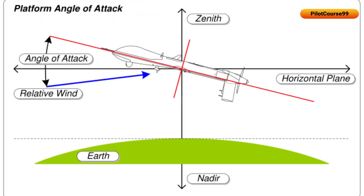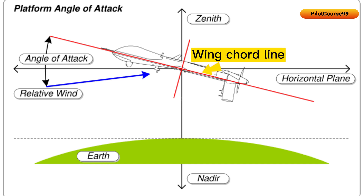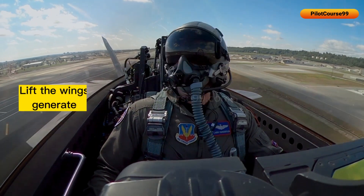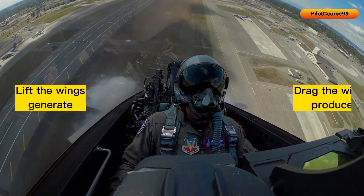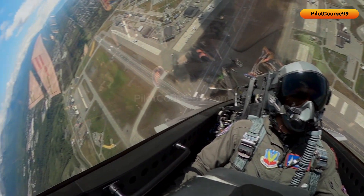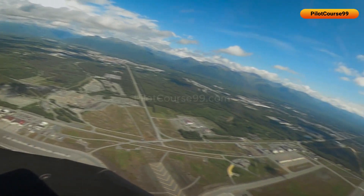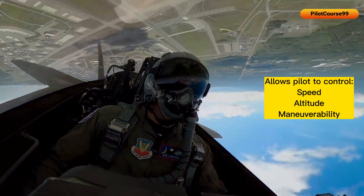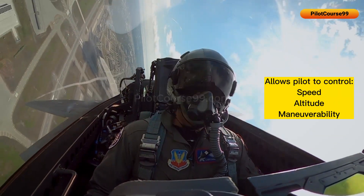Angle of attack in a fighter jet is the angle between the incoming air and the wing chord line, which is an imaginary line that connects the wing's leading edge and trailing edge. It determines how much lift the wings generate and how much drag they produce. This allows the pilot to control the speed of the aircraft, its altitude, and also its maneuverability.